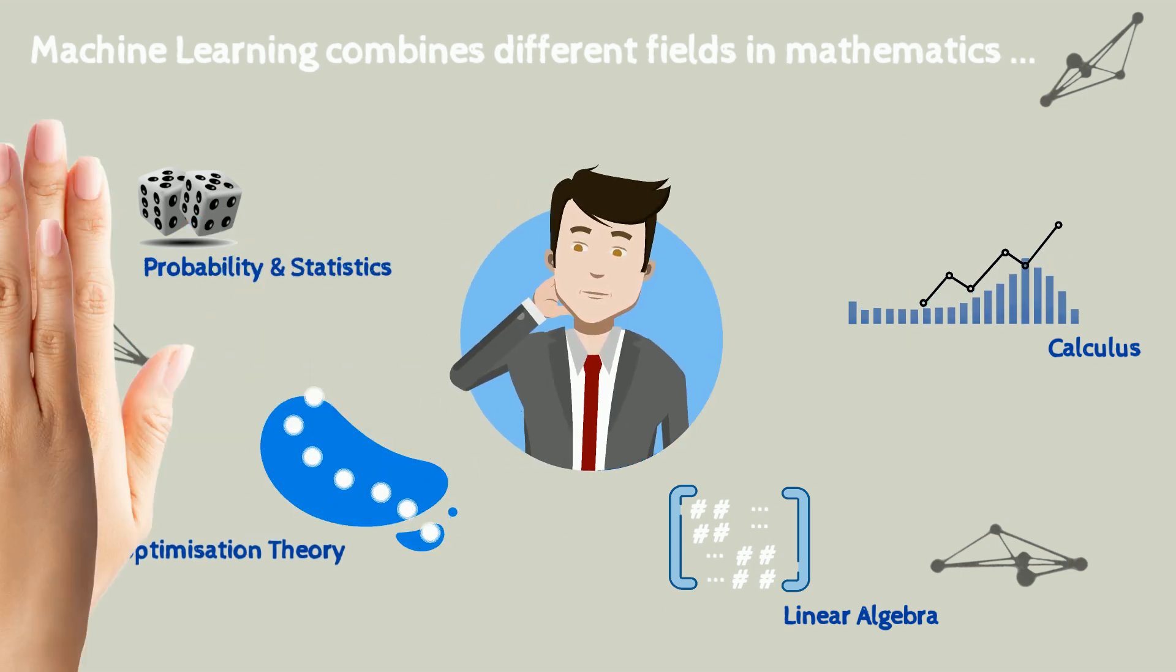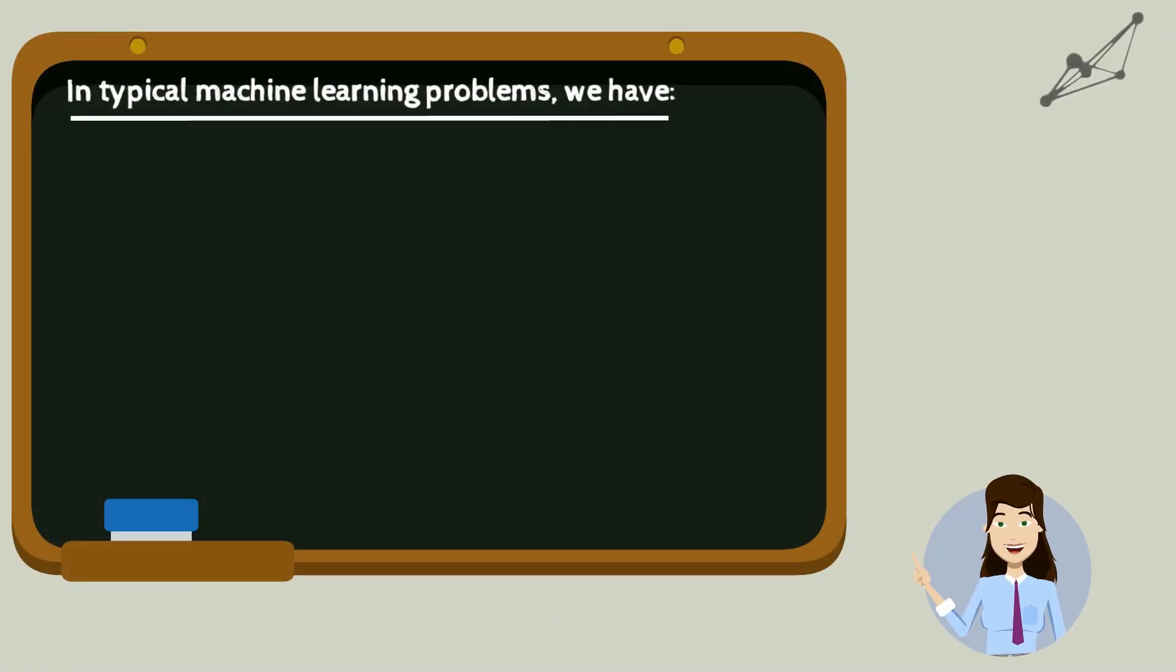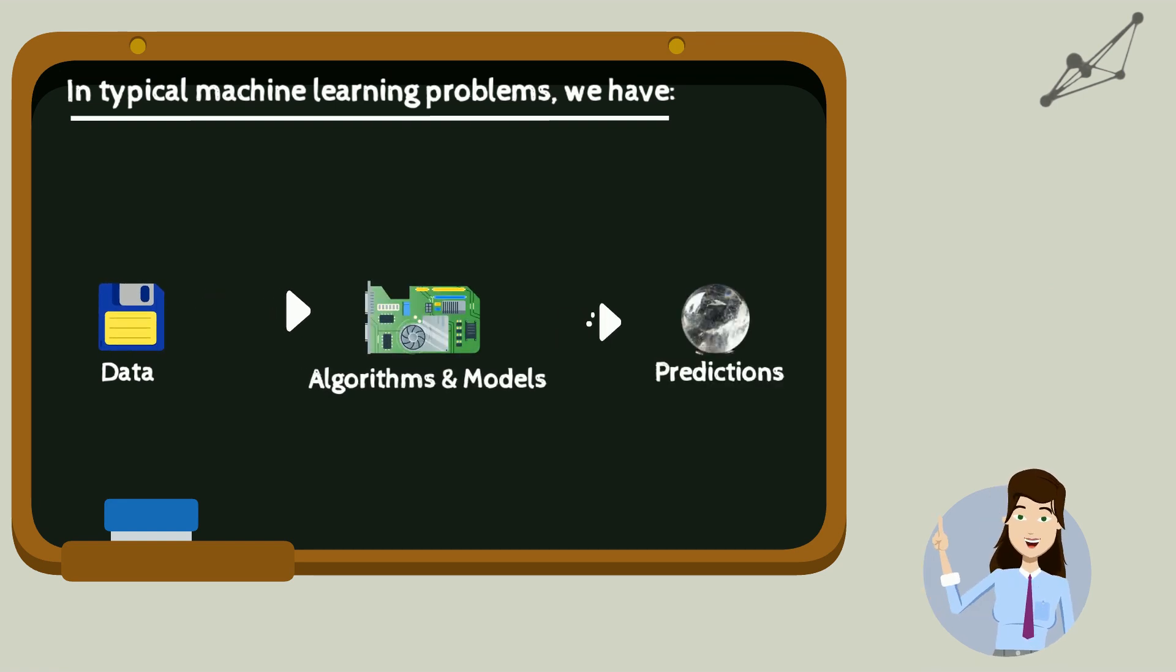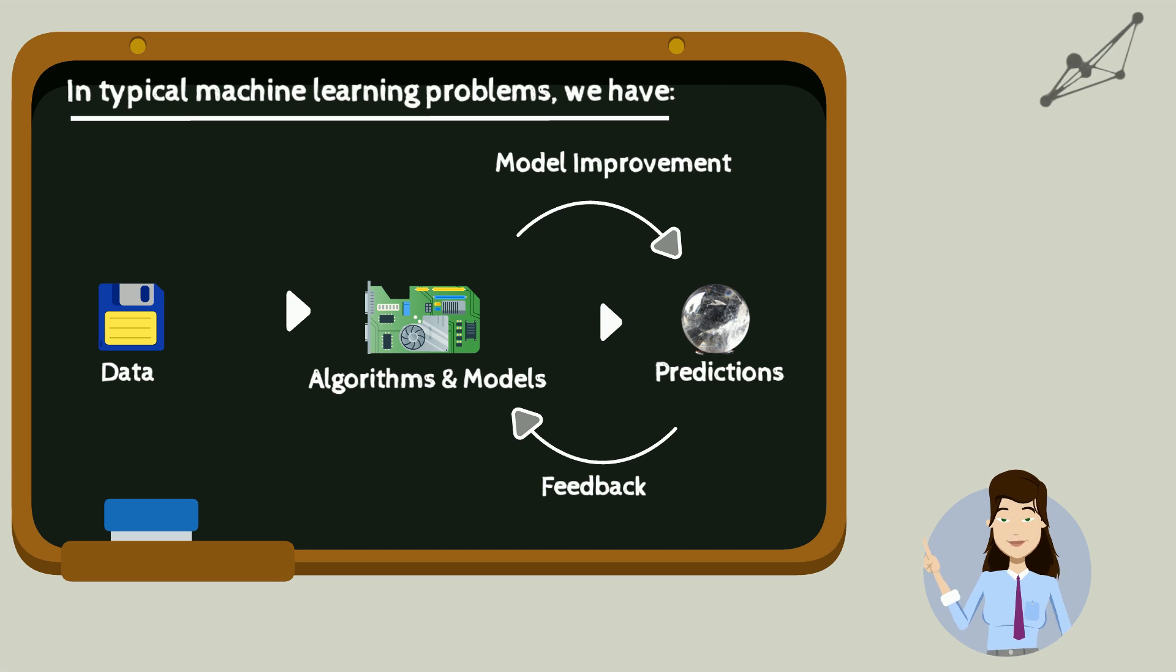Wondering why? Let's illustrate! Here's a typical machine learning workflow. Starting from data, we design algorithms and models that can make predictions. Errors from these predictions are fed back to refine and update the model. This process repeats until low prediction errors are achieved.